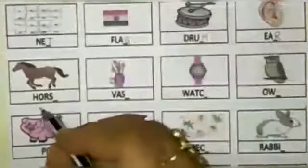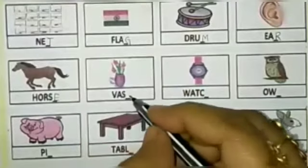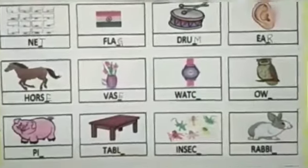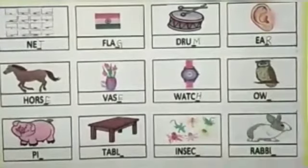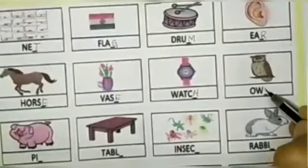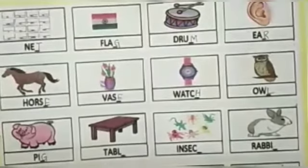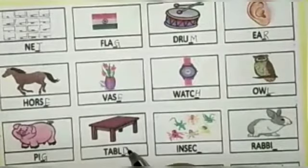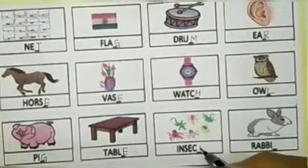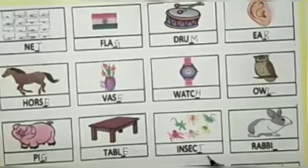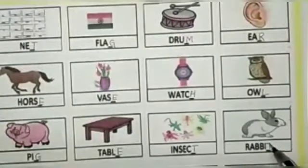Ear. E-A-R. Horse. H-O-R-S-E. Horse. Bass. B-A-S-S. Bass. Watch. W-A-T-C-H. Watch. Owl. O-W-L. Owl. Pig. P-I-G. Pig. Table. T-A-B-L-E. Table. Insect. I-N-S-E-C-T. Insect. Rabbit. R-A-B-B-I-T. Rabbit.